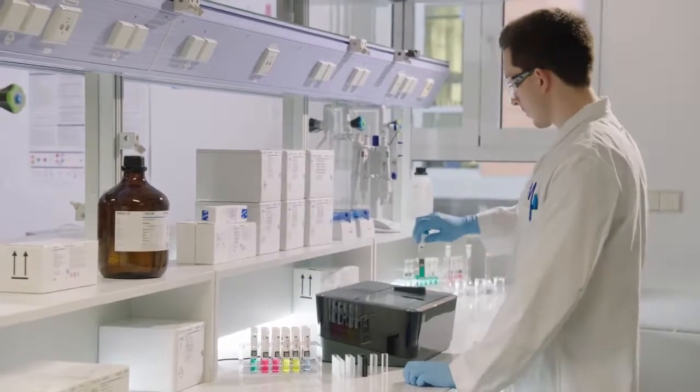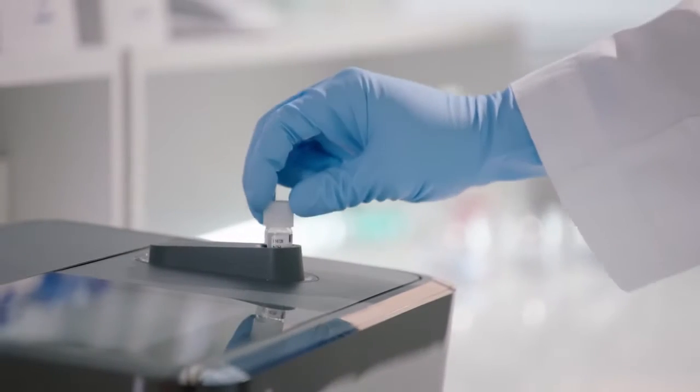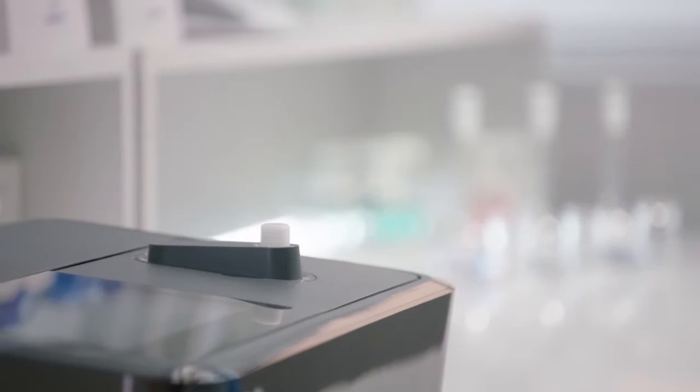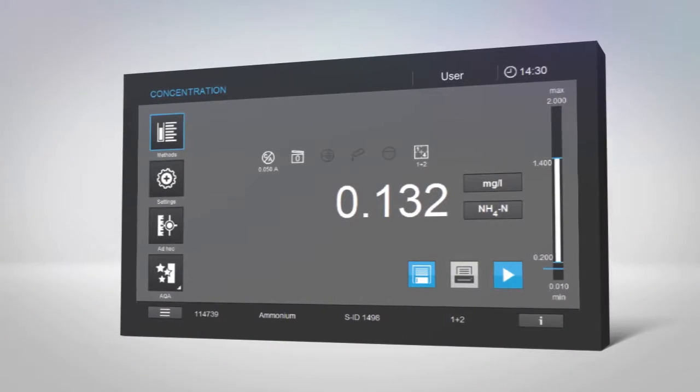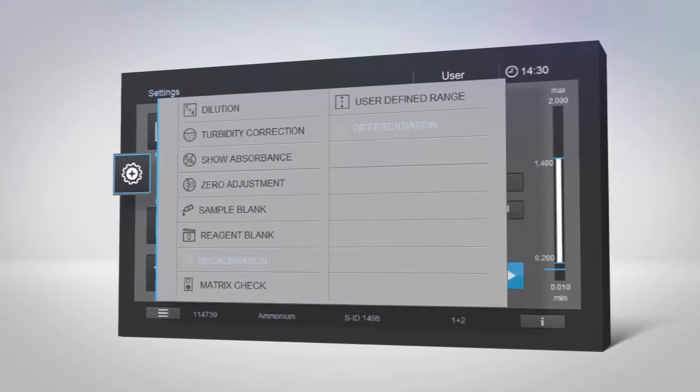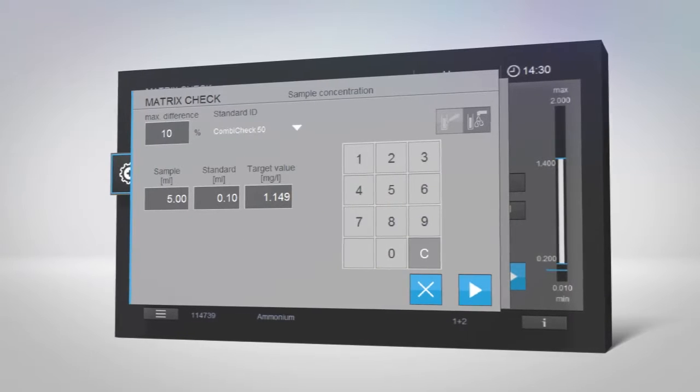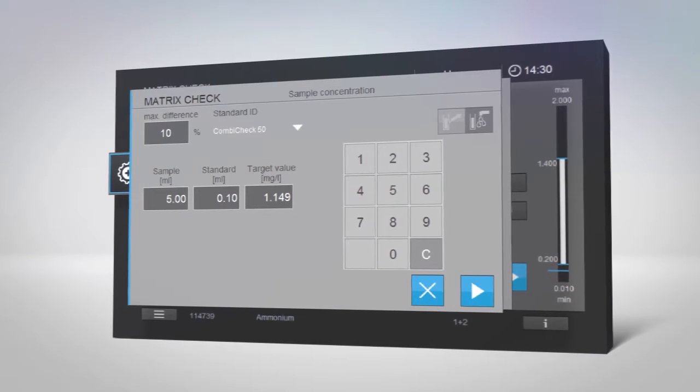The Matrix Check function helps you test whether other substances in your sample are interfering with your photometric determination. After your measurement, simply tap the settings icon and select Matrix Check. SpectraQuant Prove will guide you through the whole process.